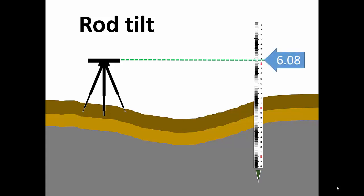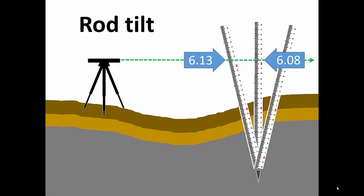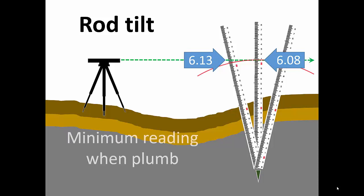Our goal is to read the rod when it is truly vertical, or plumb. But if it is tilted away from vertical, the line of sight no longer intersects the rod at the minimum distance above the measured point. When tilted, the rod shows a false reading that is numerically higher than the true vertical reading.